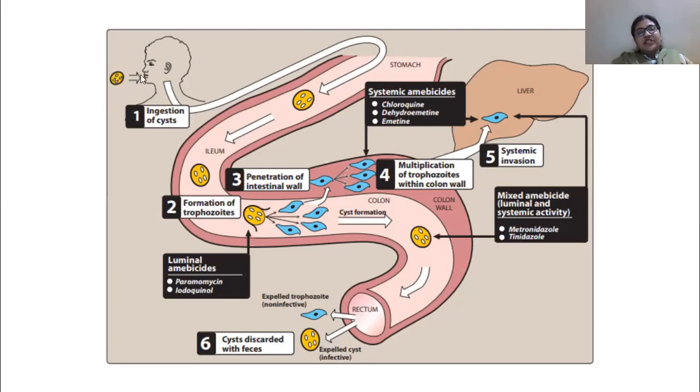A person ingests a cyst. First we'll talk about the non-invasive type of disease. The cyst is being ingested and then it goes to the stomach. Surprisingly, stomach HCl does not affect the cyst at all. It passes through the stomach without being affected, enters into the ileum, and that's the site where it would start to produce trophozoites.